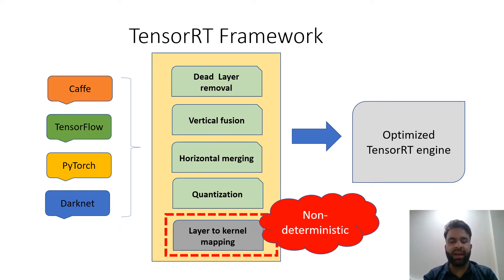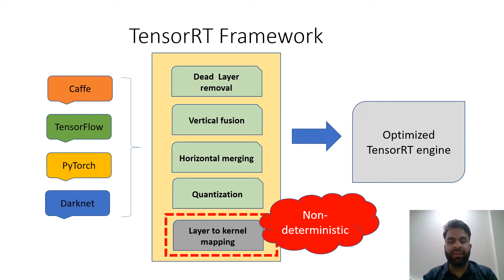The layer-to-kernel mapping step is the non-deterministic step of TensorRT. What this means is that if we build a TensorRT engine and layer L1 is mapped to kernel K1 in that compiled engine, it's not necessary that when you build it again, L1 will be mapped to K1 — it's quite possible that L1 will be mapped to K2. This non-determinism in TensorRT will be the main focus of this talk throughout.